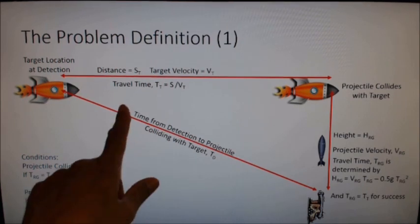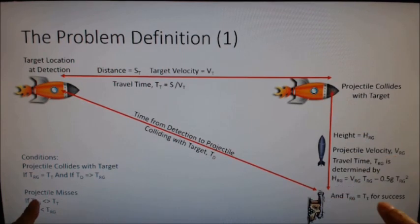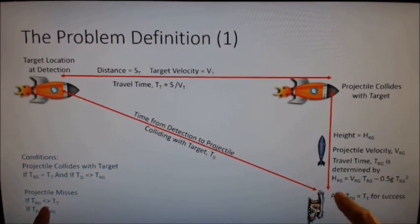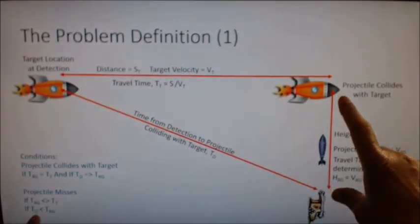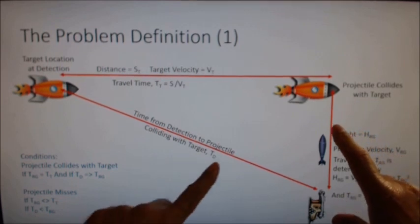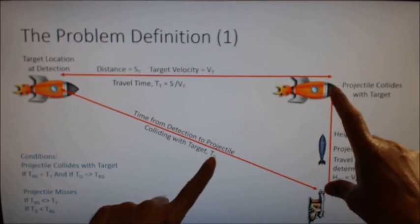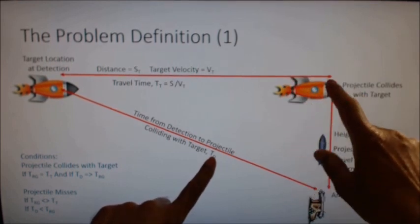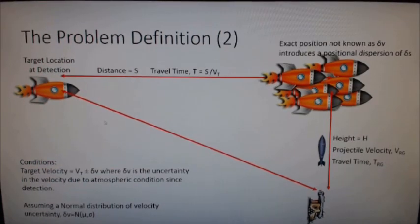And if the detection time is equal to or greater than this travel time. The projectile misses if the railgun travel time and the target travel time are not the same. And it also misses if this target detection time is less than the railgun travel time. That means the target is beyond the reach of the railgun based on time of detection.